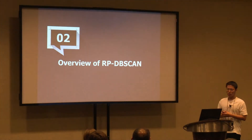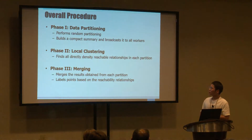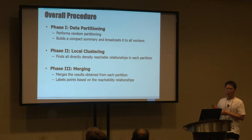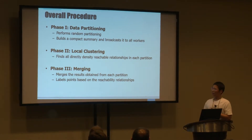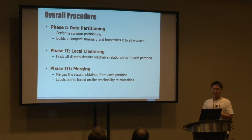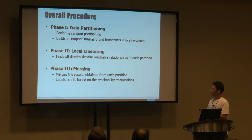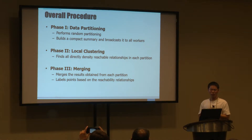Let's talk about the overview of our algorithm. Our algorithm consists of three phases — this is the common procedure of parallel processing. Phase one is data partitioning based on random partitioning. Phase two is local clustering to find all directly density-reachable relationships between data points. Phase three is merging to combine all results obtained from each partition.